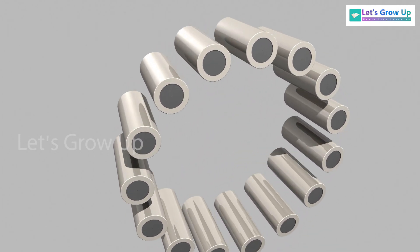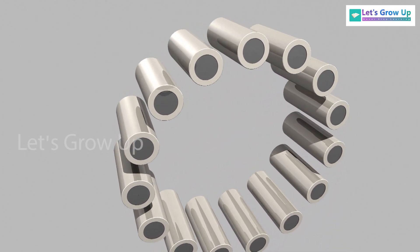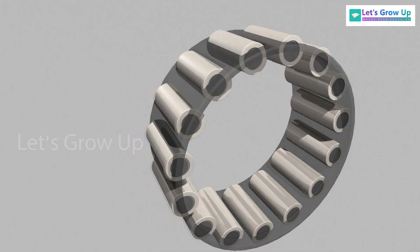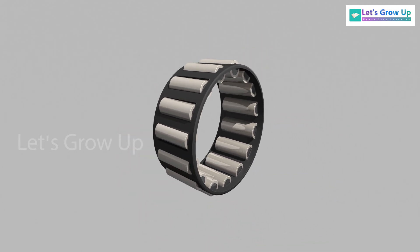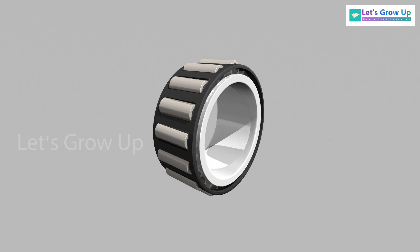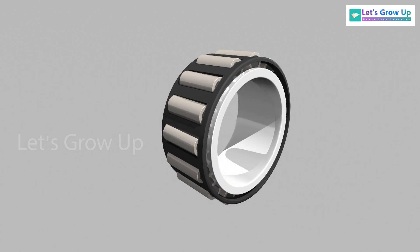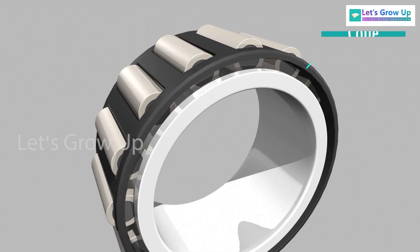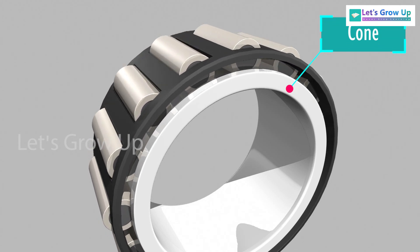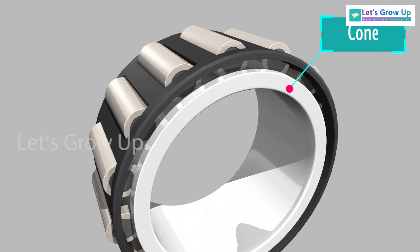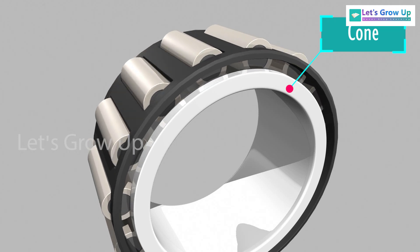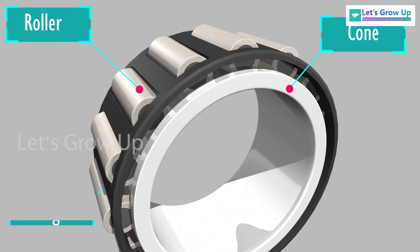The rollers are held together by a cage. The cage is used to hold the rollers in the proper orientation so they don't group together. All these rollers run on the outer cone. The cone acts like a track and guides the rollers. The roller, cage, and cone together are called the cone assembly.